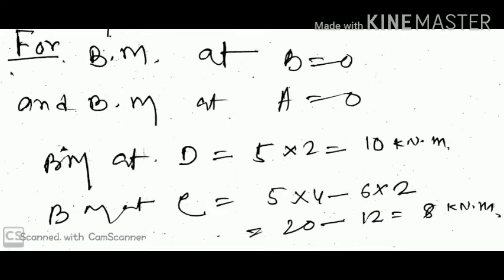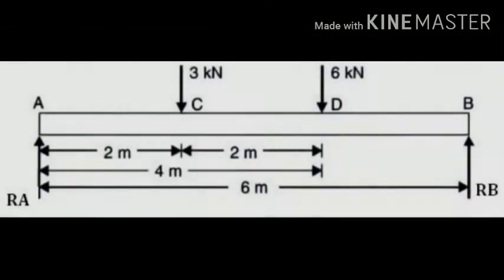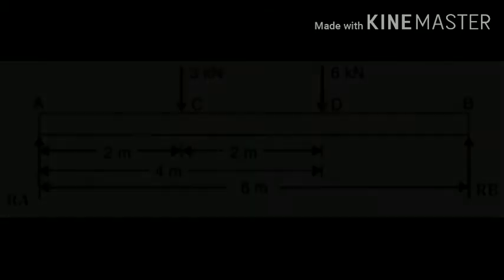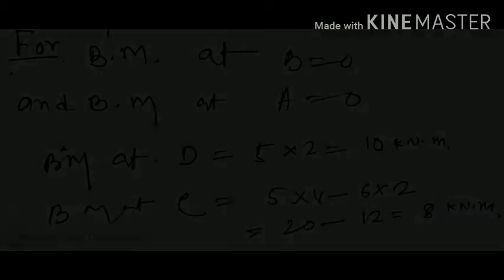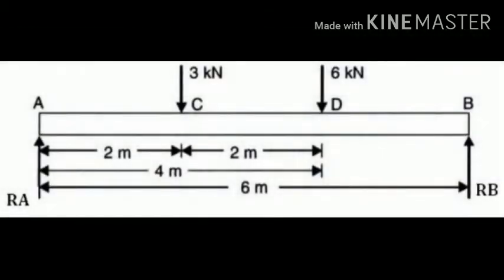BM at D equals force into distance. On the left-hand side of D, the force is plus 5 kilo newtons upward, at a distance of 2 meters, so BM at D equals 5 into 2, which is 10 kilo newton-meters. BM at C equals 5 into 4 minus 6 into 2, which is 20 minus 12, equals 8 kilo newton-meters. Now we draw the SFD and BMD.